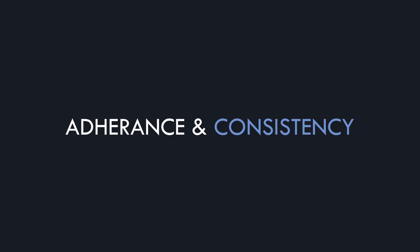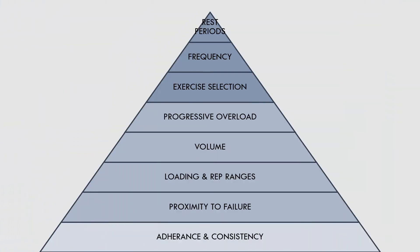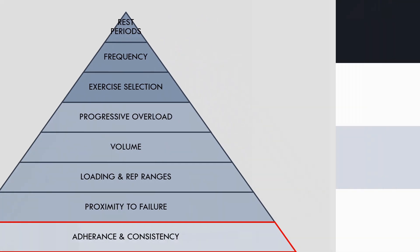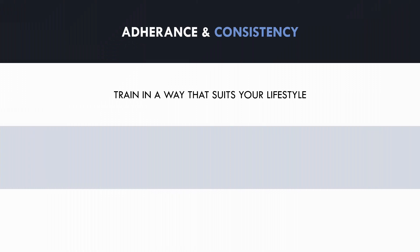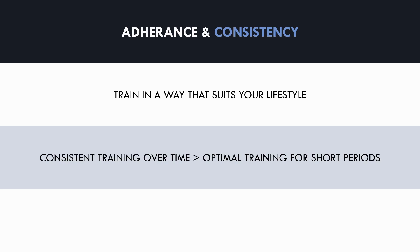Before we get into how training can be manipulated to maximise muscle growth, we first need to cover an underlying factor that needs to be in place for successful muscle growth to occur. The first and most important factor to consider is adherence and consistency. This isn't a training variable that can be programmed, and there aren't any special tricks to optimise it. Essentially, trainees need to follow a training protocol that they can consistently stick to for years on end based on their individual lifestyle. A trainee who performs consistent training over time with sub-optimal programming will still probably achieve greater hypertrophy than someone who optimises their training program but cannot stick to it consistently. So before any other variables are considered, we need to ensure that we can actually stick to the training protocol.